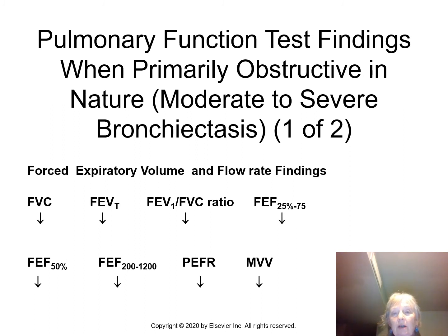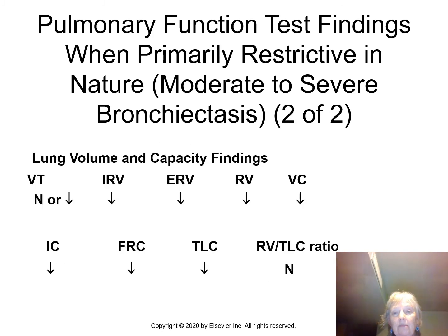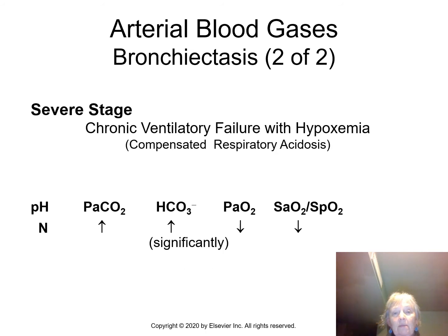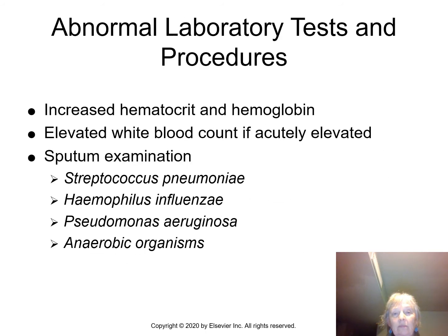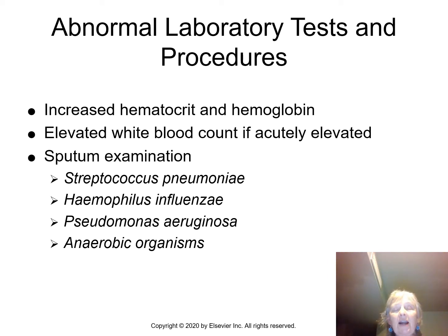PFT findings and ABGs follow the patterns you've seen with other obstructive diseases. Regarding abnormal lab findings: if the patient is hypoxic, hemoglobin and hematocrit levels rise. To transport more oxygen, the body produces additional red blood cells — if there aren't enough, a few more may help compensate.